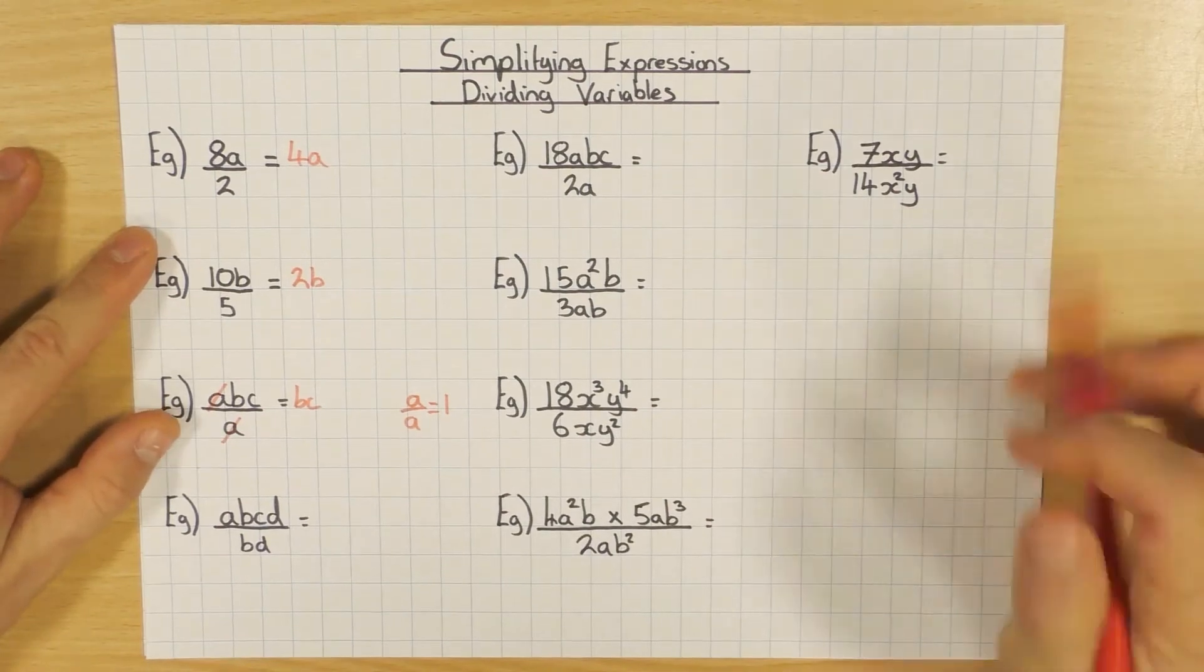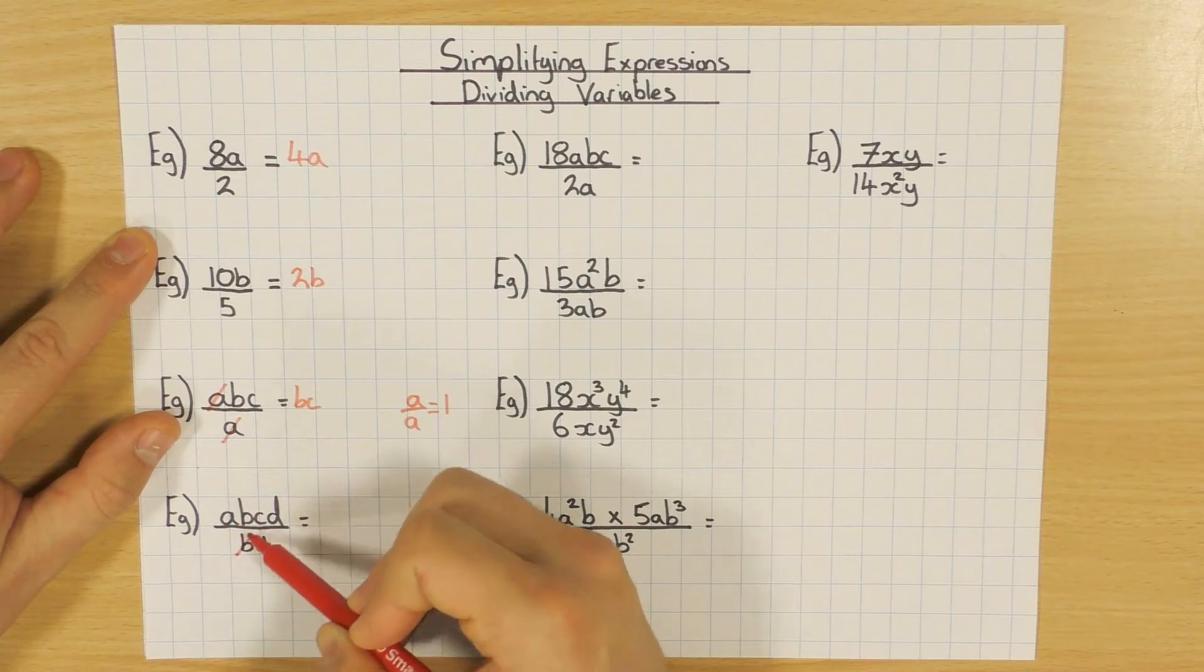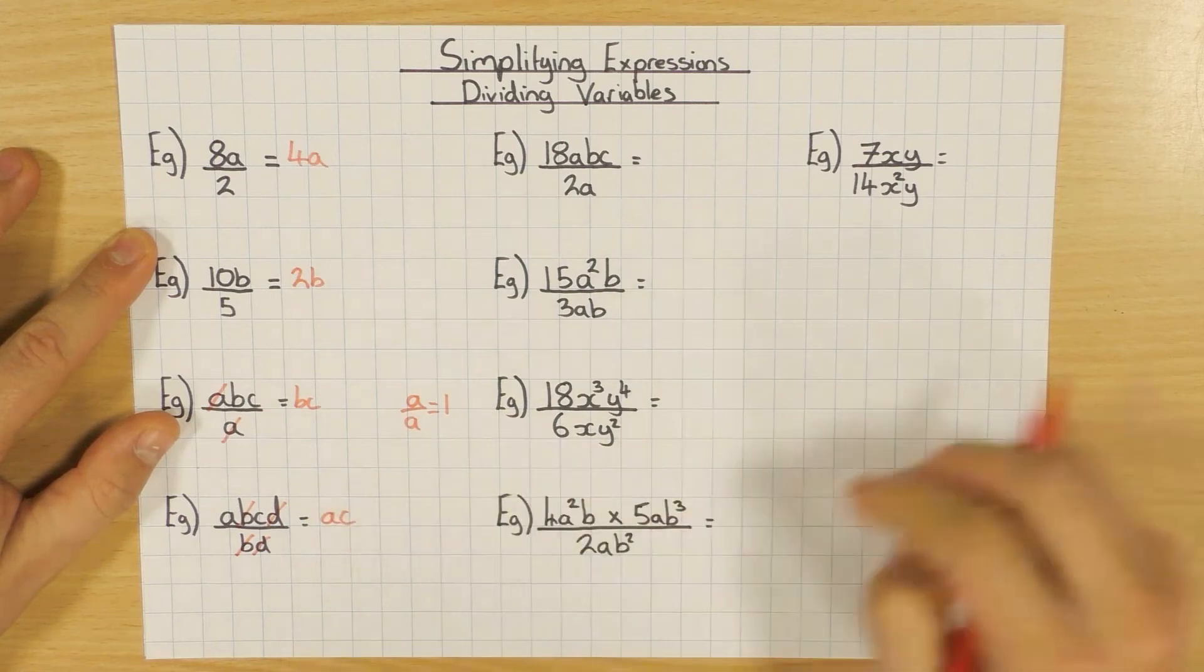So, let's have a look at the next one then. It's the same idea, what's the same on top and bottom? What's going to cancel? Well, I've got a b and a b, and a d and a d. So what's left? I'm just left with ac.